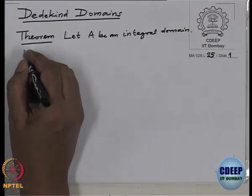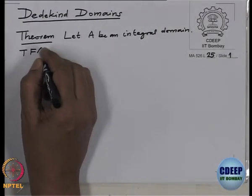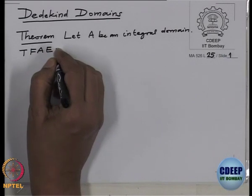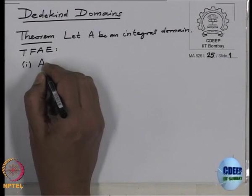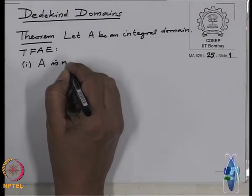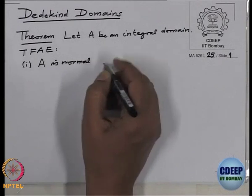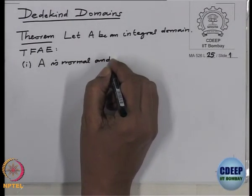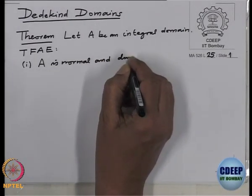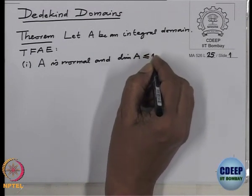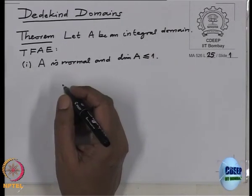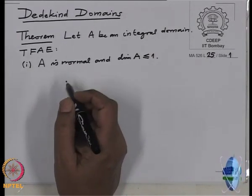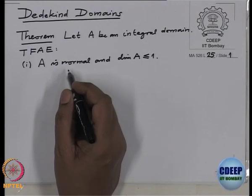Then the following are equivalent. One: A is normal, and the Krull dimension of A is at most one. Let me remind you: when we say normal, that includes Noetherianness. So when A is a normal domain, that means A is a Noetherian, integrally closed domain.